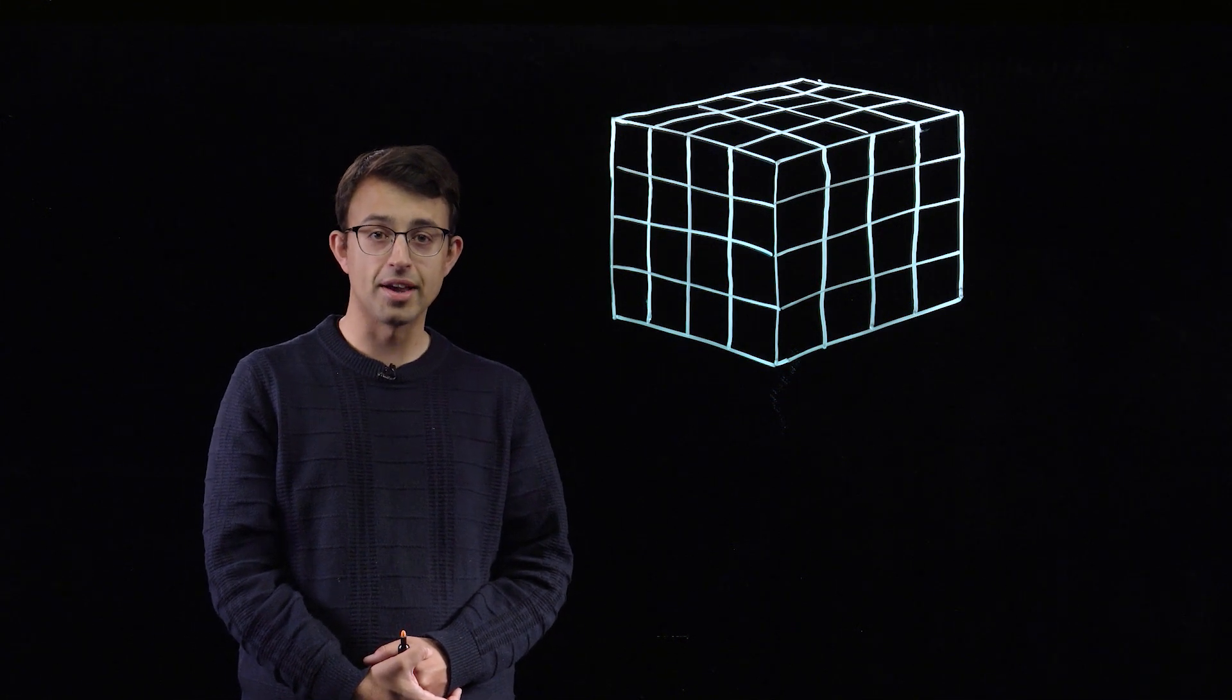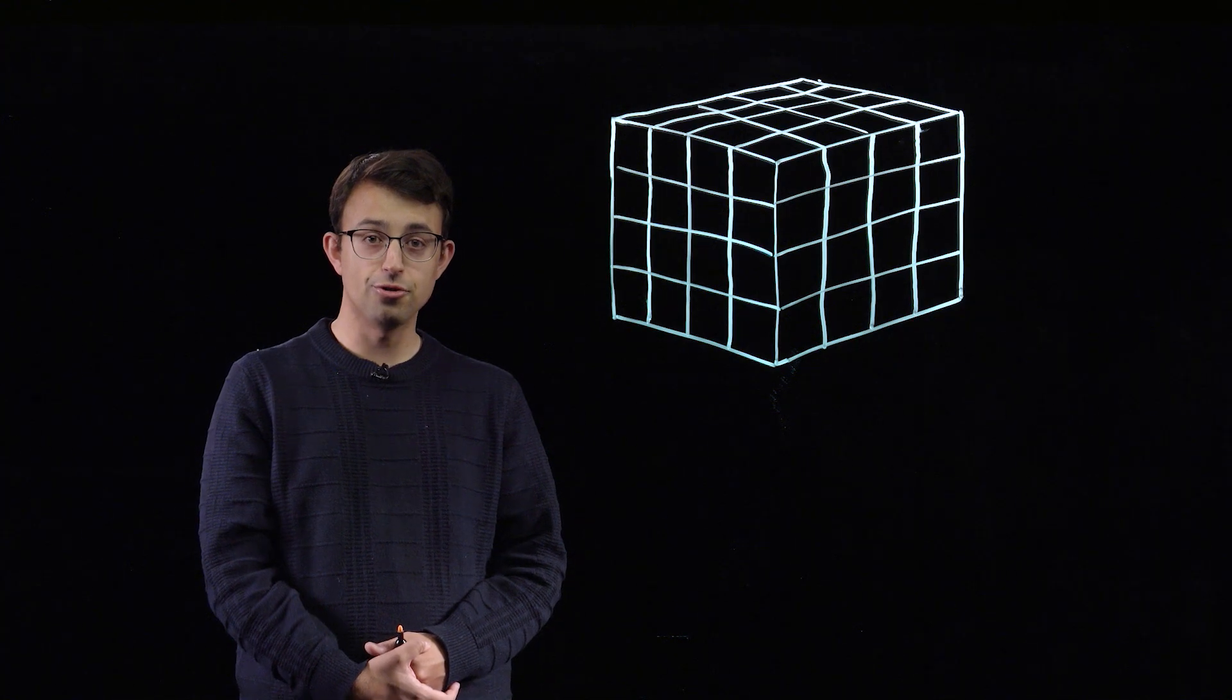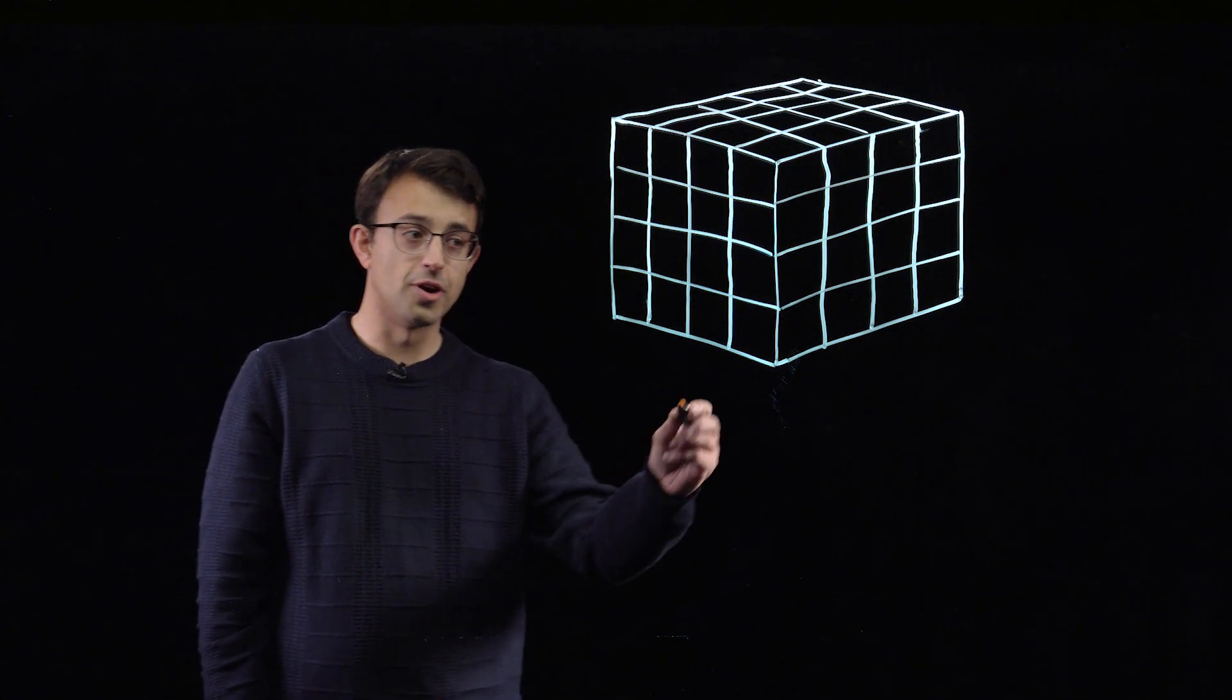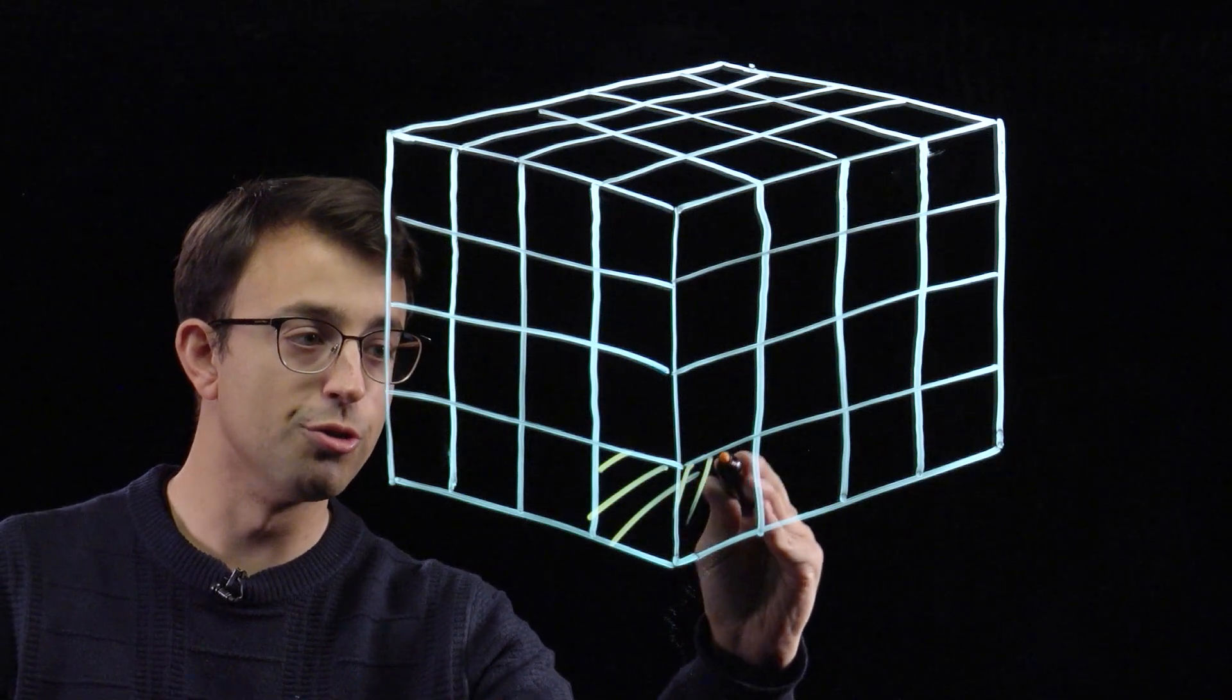And we can do a similar thing with the cube. Obviously we're now in three dimensions rather than two dimensions, but we can still find some kind of chessboard colouring using two colours.